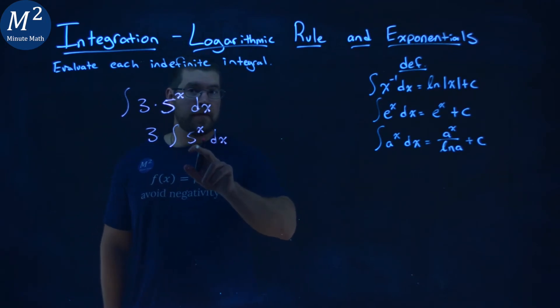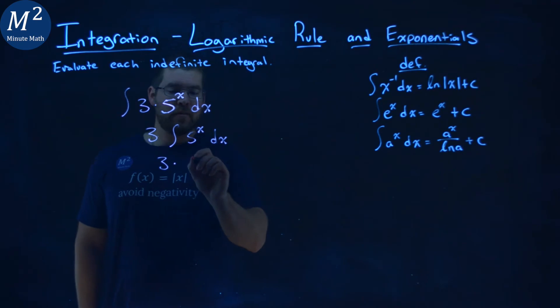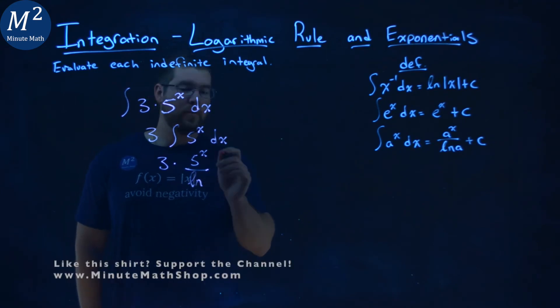Our a value is going to be 5 there. So we have 3 times our a value 5, so 5 to the x power over the natural log of a value being 5. Then we have the plus c.